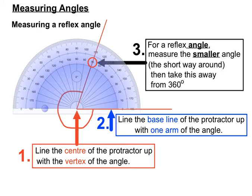For a reflex angle, we're actually going to measure the smaller angle, the short way around. And then we're going to take it away from 360 degrees because we know that one full revolution is 360 degrees. So if we just take away the bit that's missing from 360 degrees, then we'll be able to find the bigger of the two angles there, the long way around.